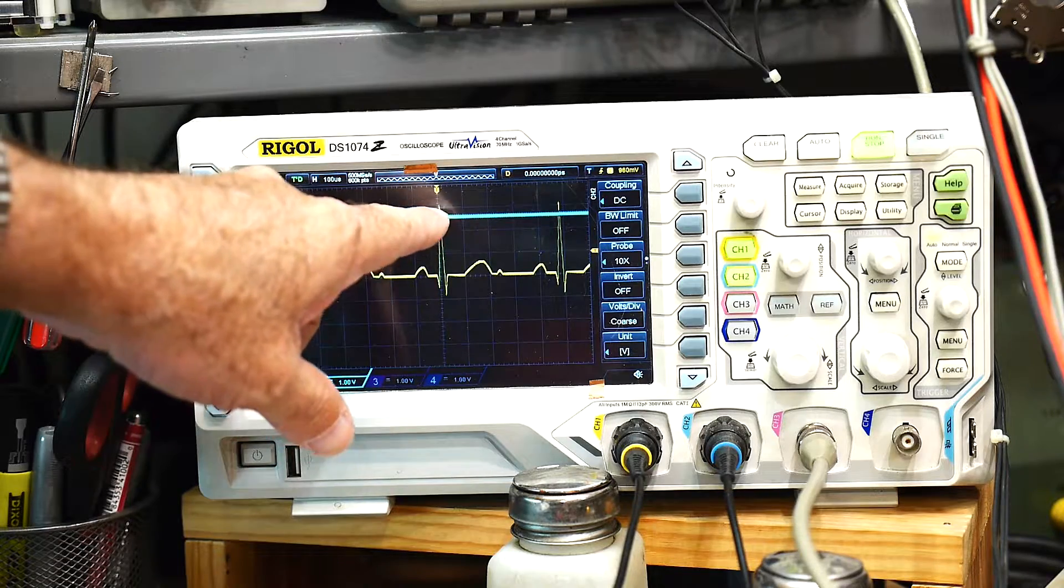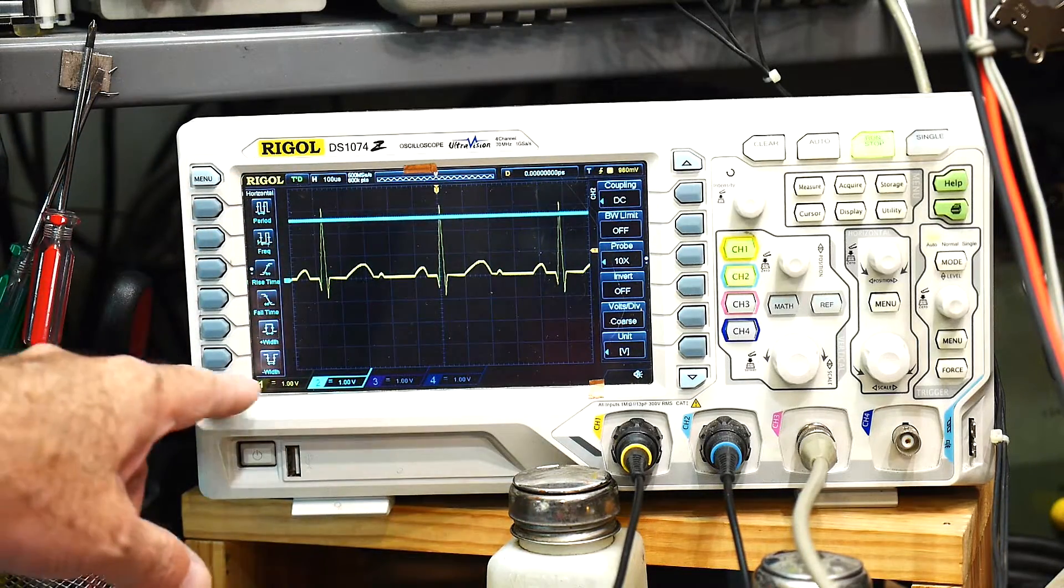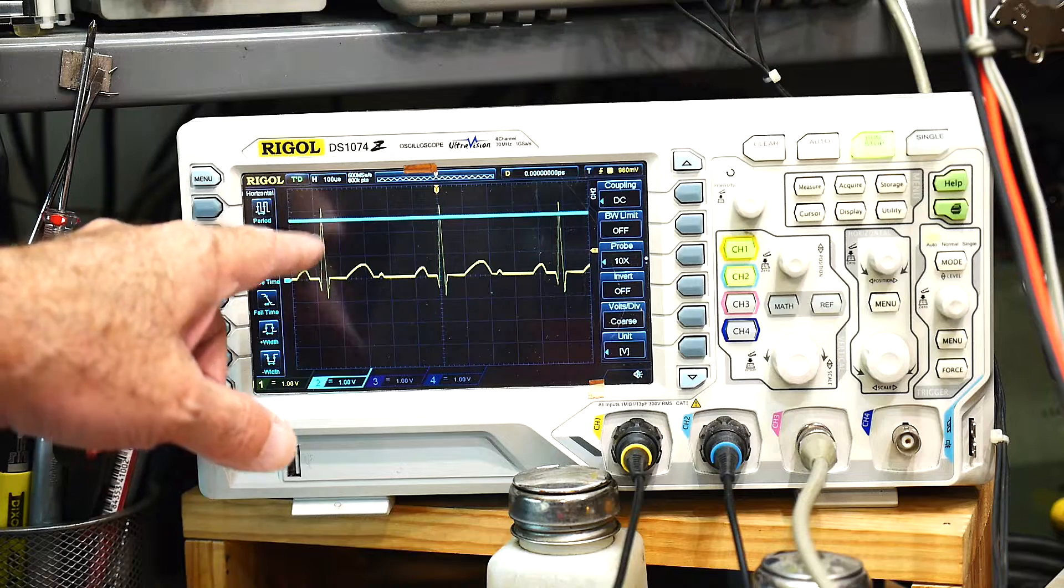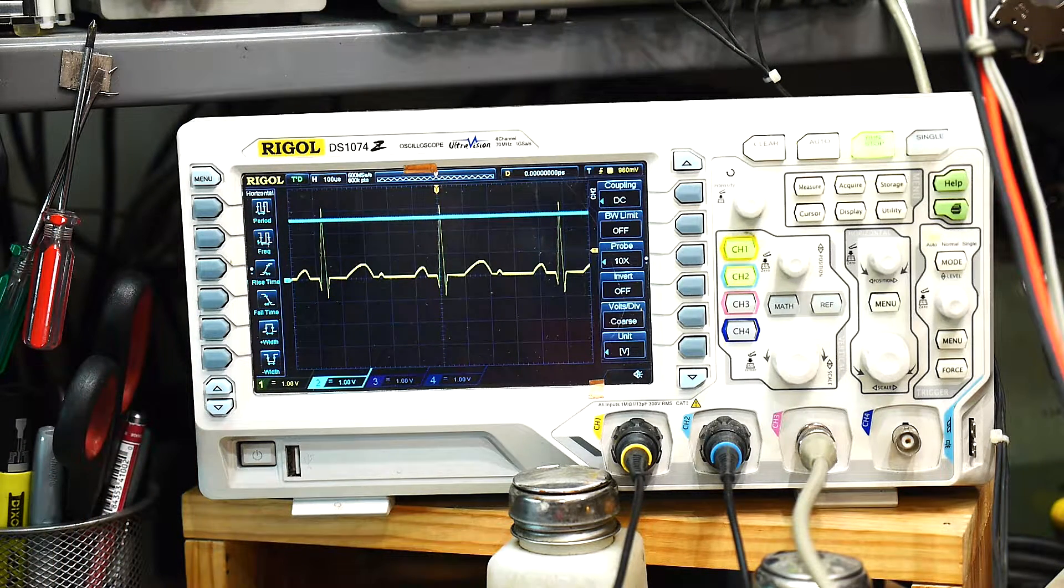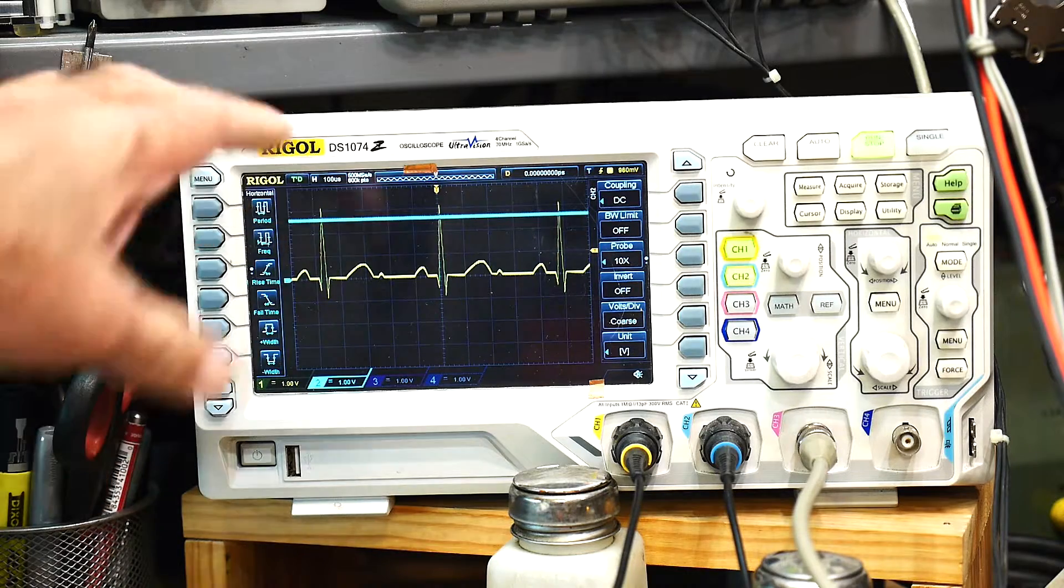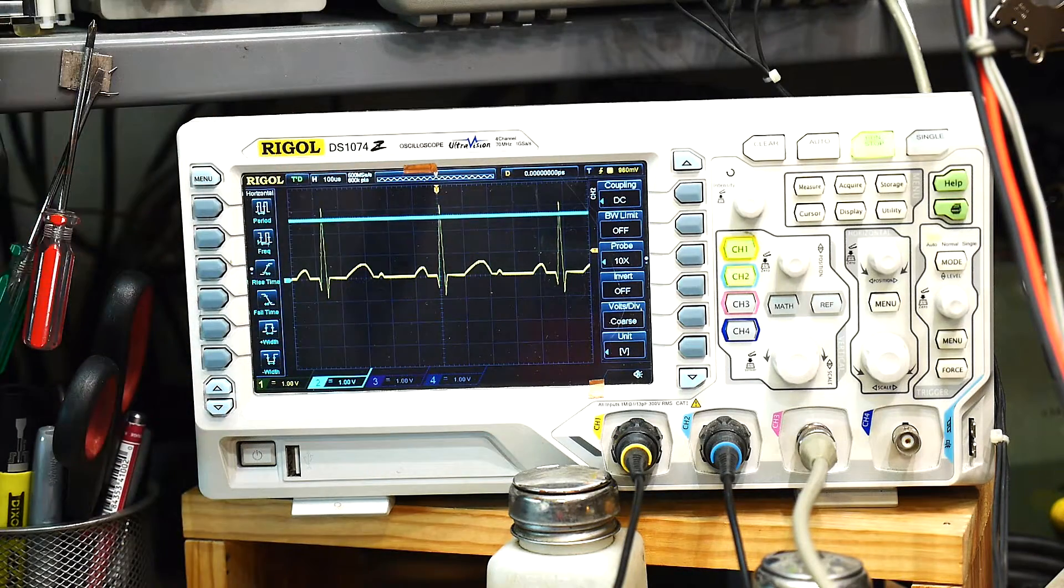They are down in voltage. So this is 1 volt per division. We're losing in this one about 0.4 volts, something like that. Not too bad in this one, but we're losing 0.4 volts.